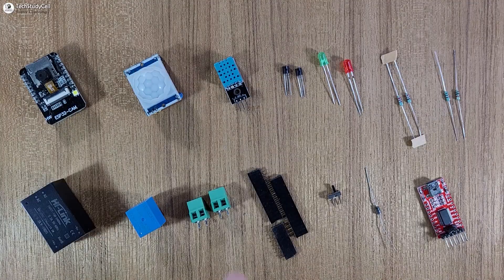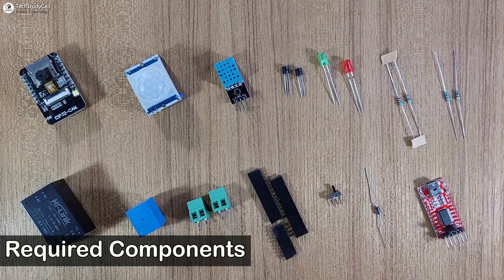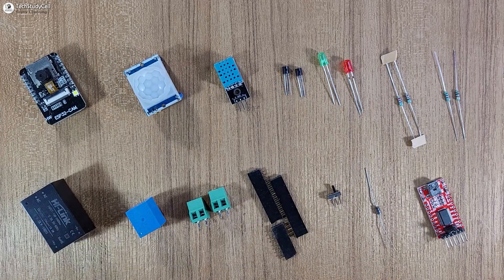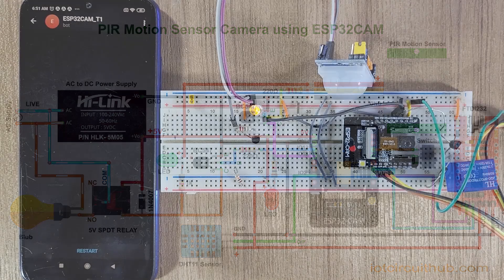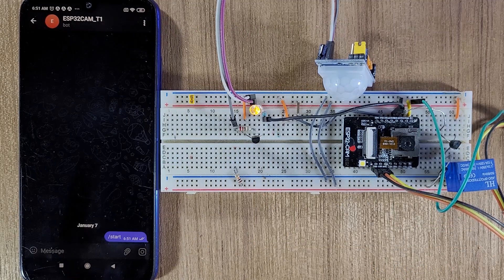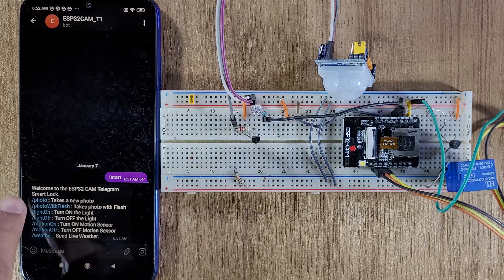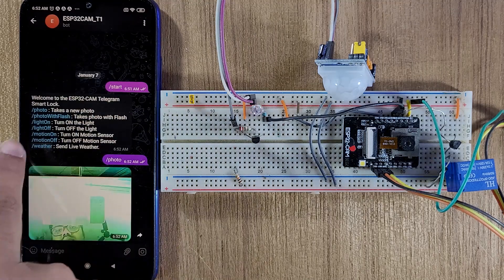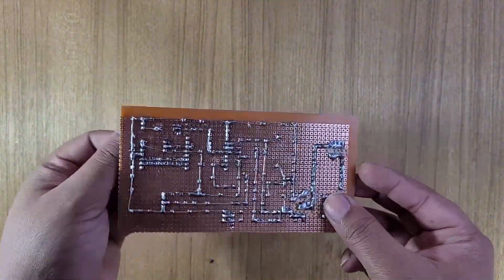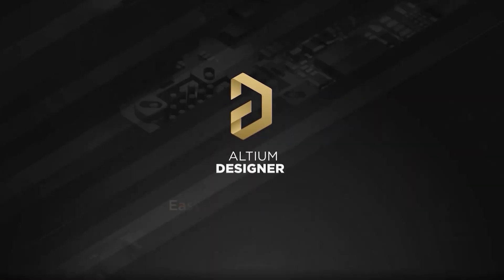So let's get started. These are the required components for this project. You have to connect all these components as per the circuit diagram. The circuit is very simple and you can directly give AC supply to it. Before designing a PCB, I also made this complete circuit on a breadboard for testing. After testing, to make the circuit compact, I designed a PCB using Altium PCB designer software.